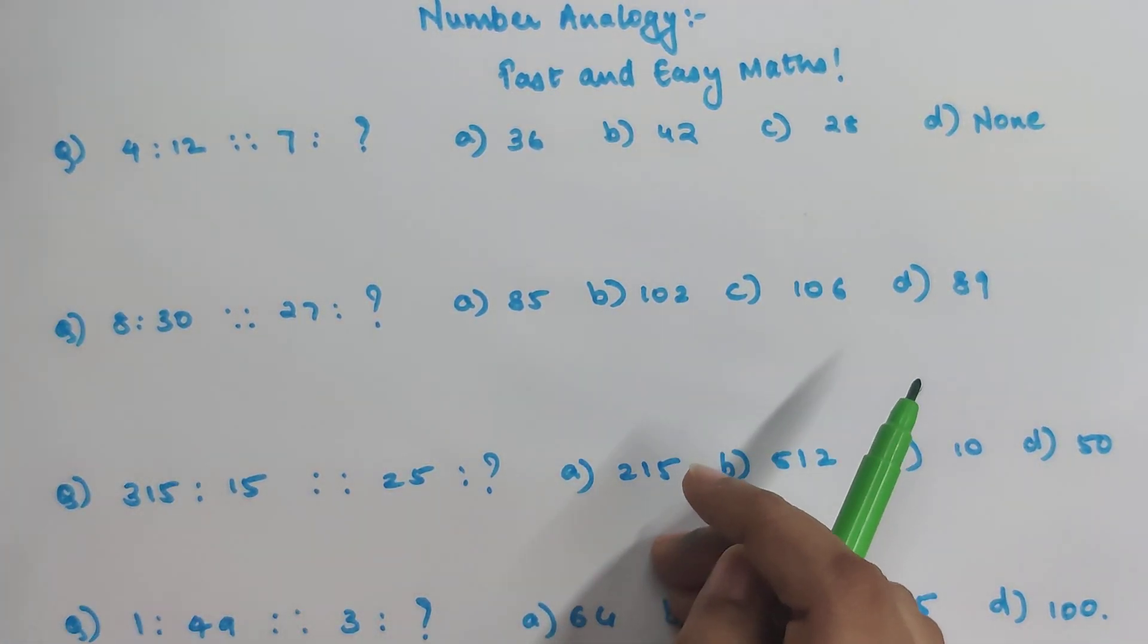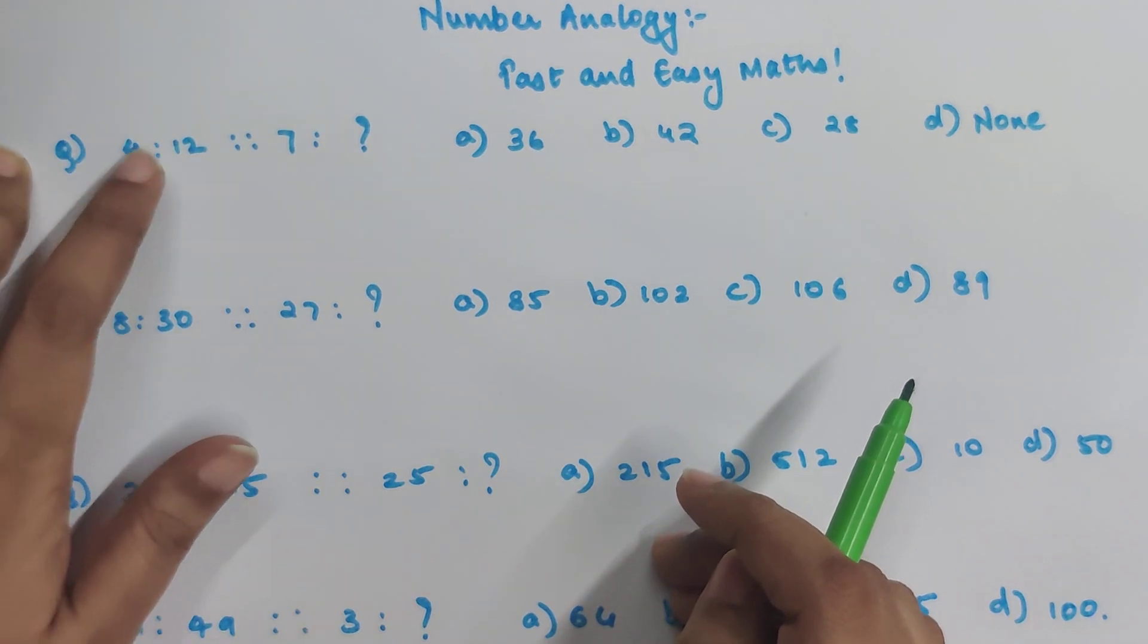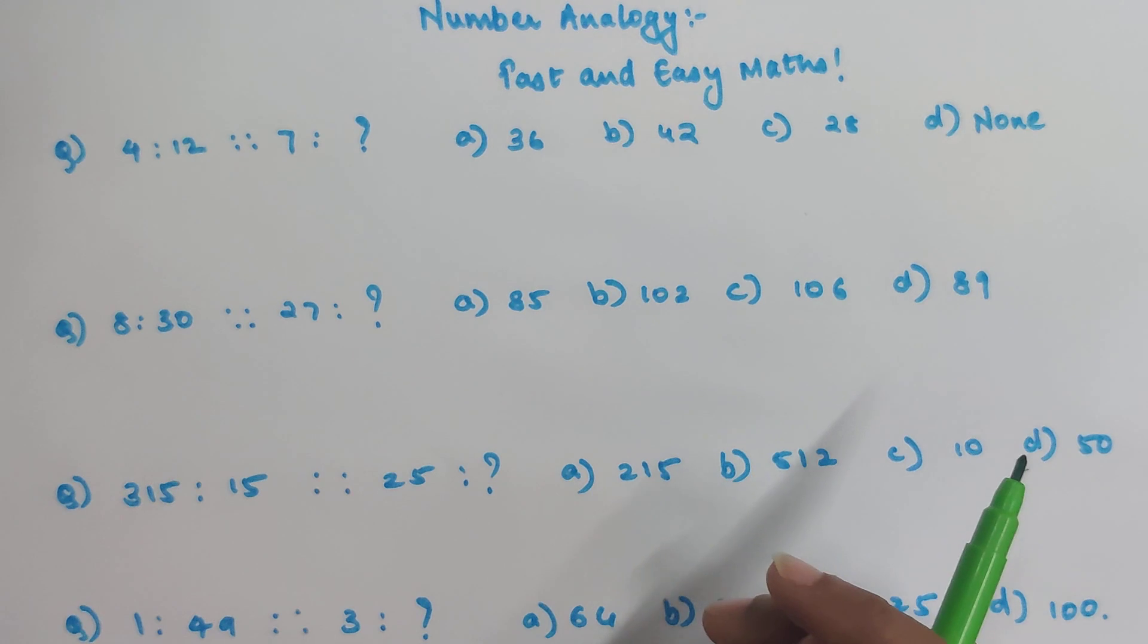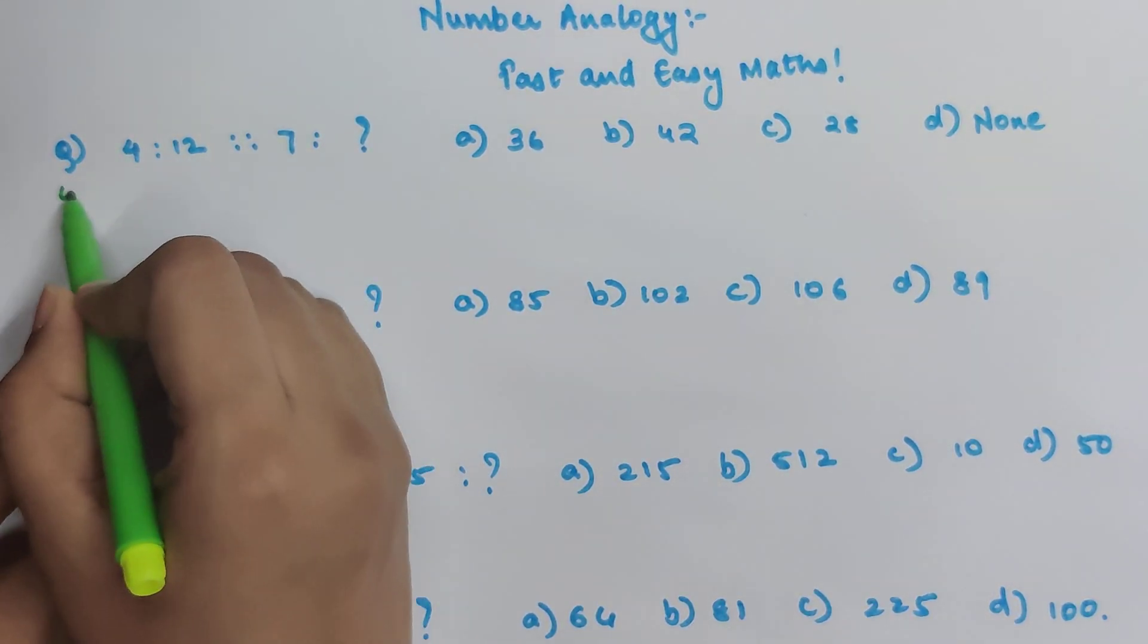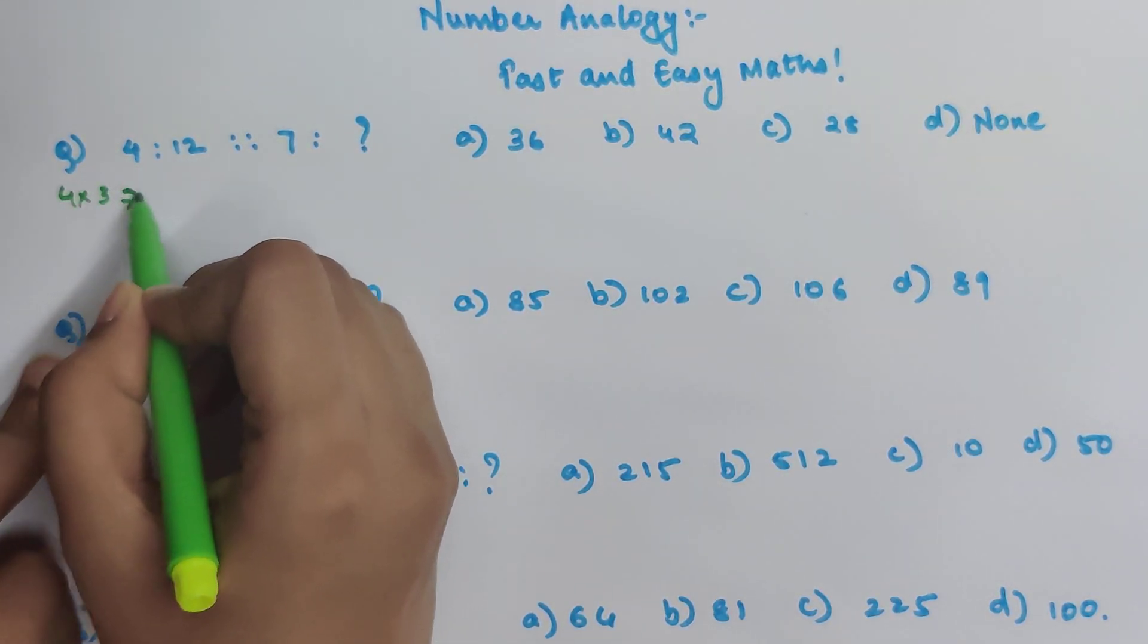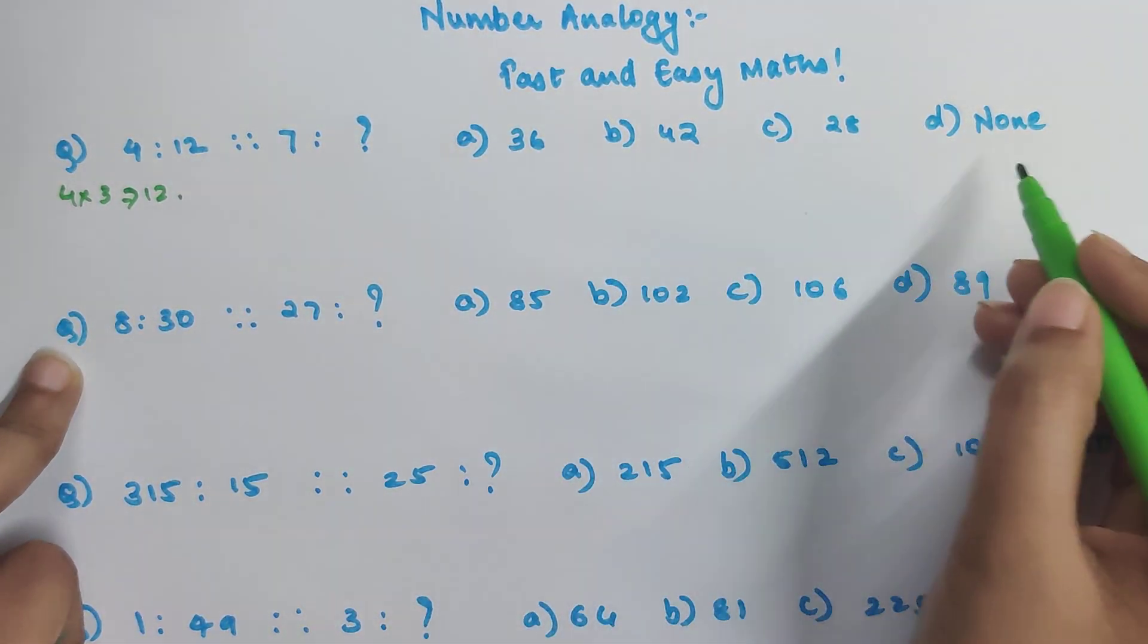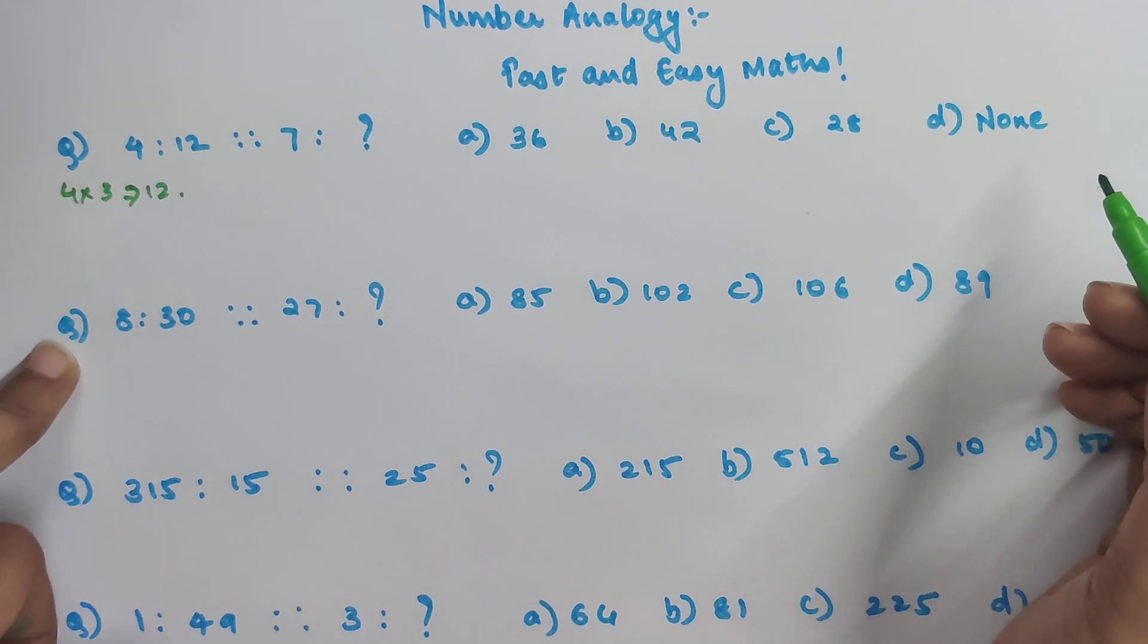So let's begin with the first one. Here you have 4 is to 12 then 7 is to what? So now please understand here you can directly understand that 4 into 3 gets you 12.